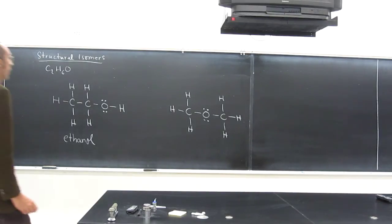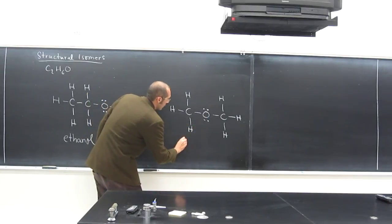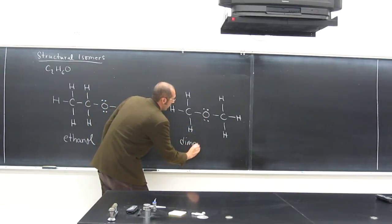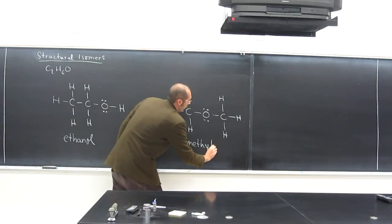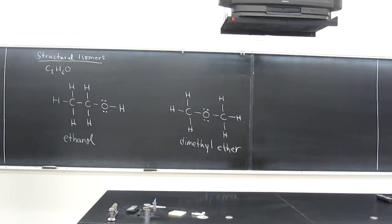And this stuff here has a different name, of course, because it's a different thing. This is called dimethyl ether. So let's go ahead and draw the bond line structures of these things.